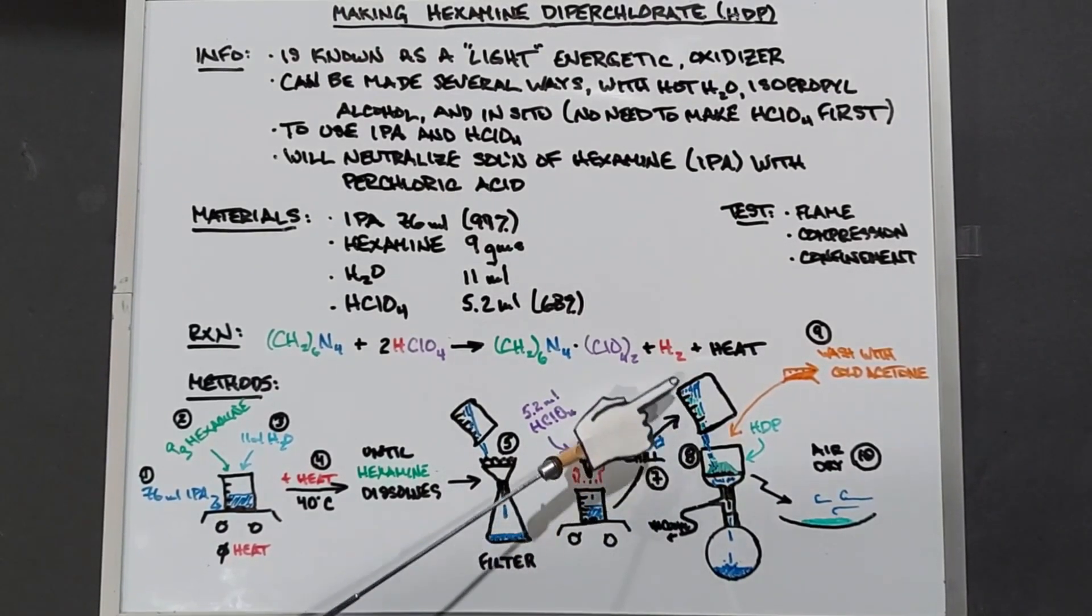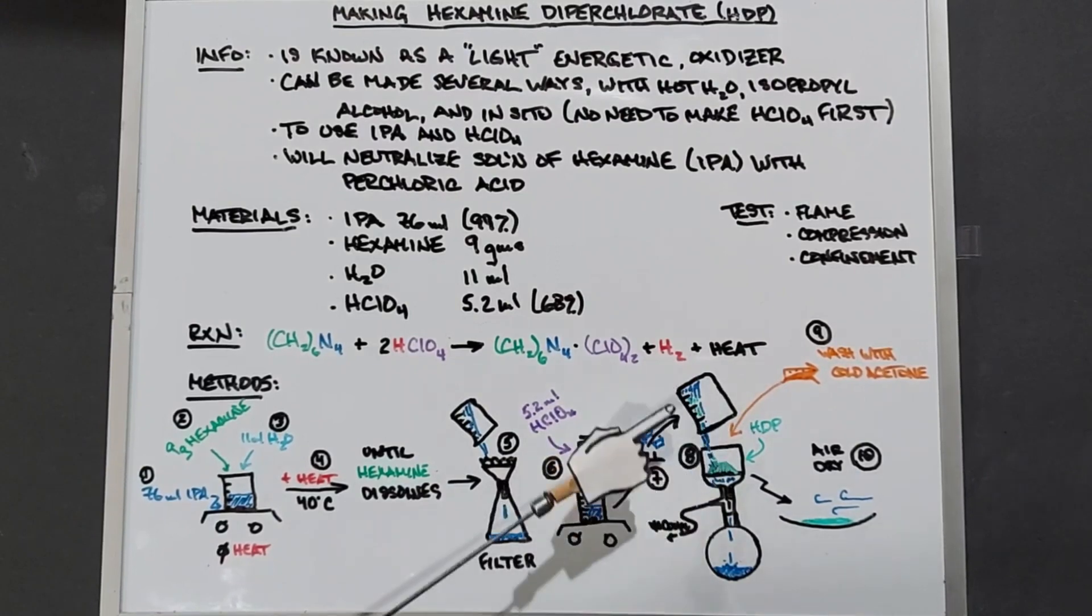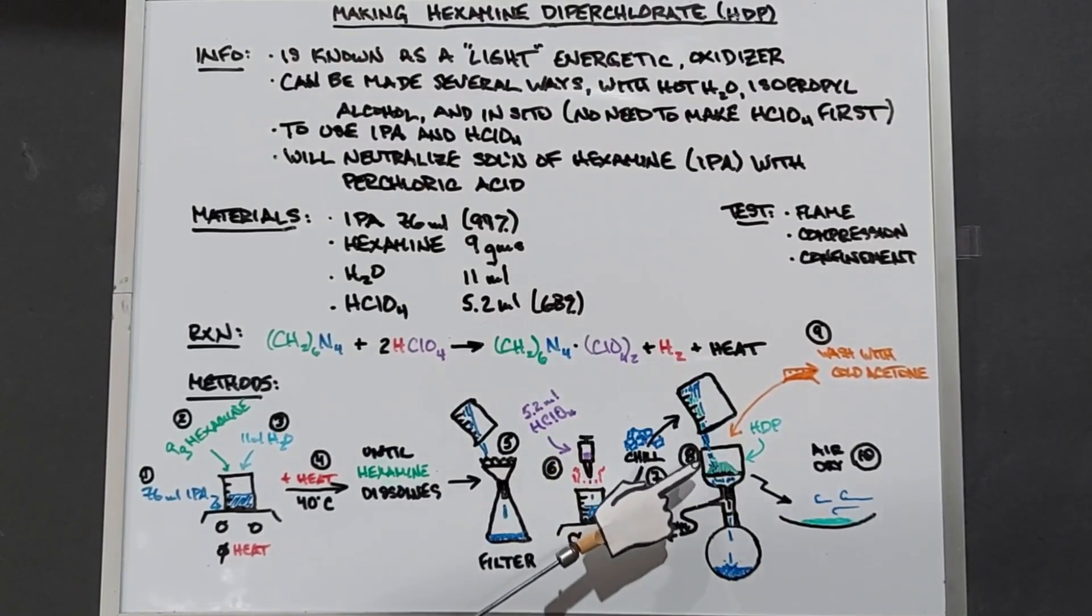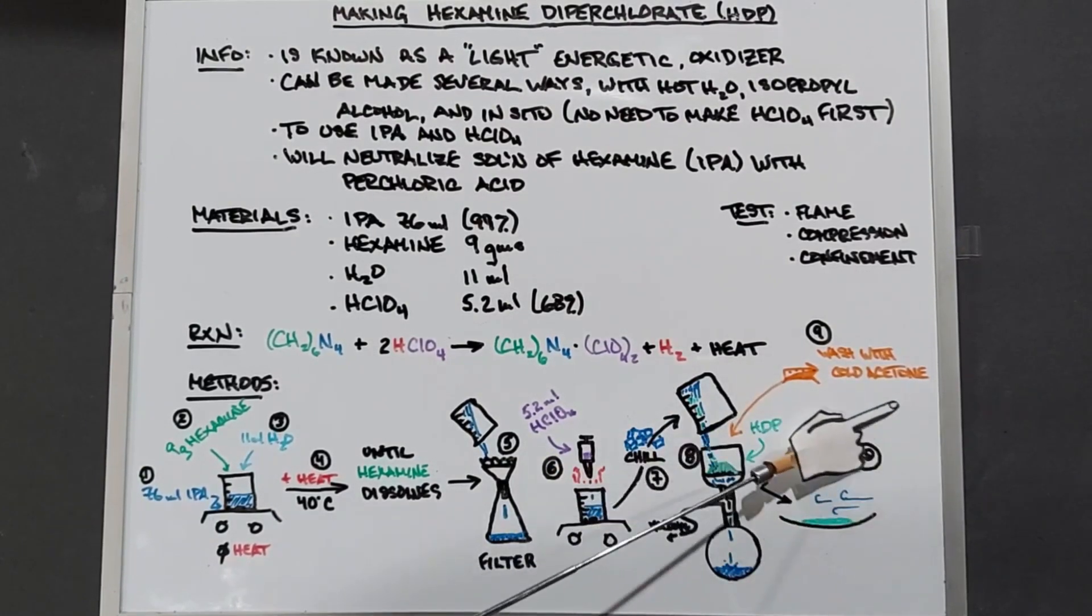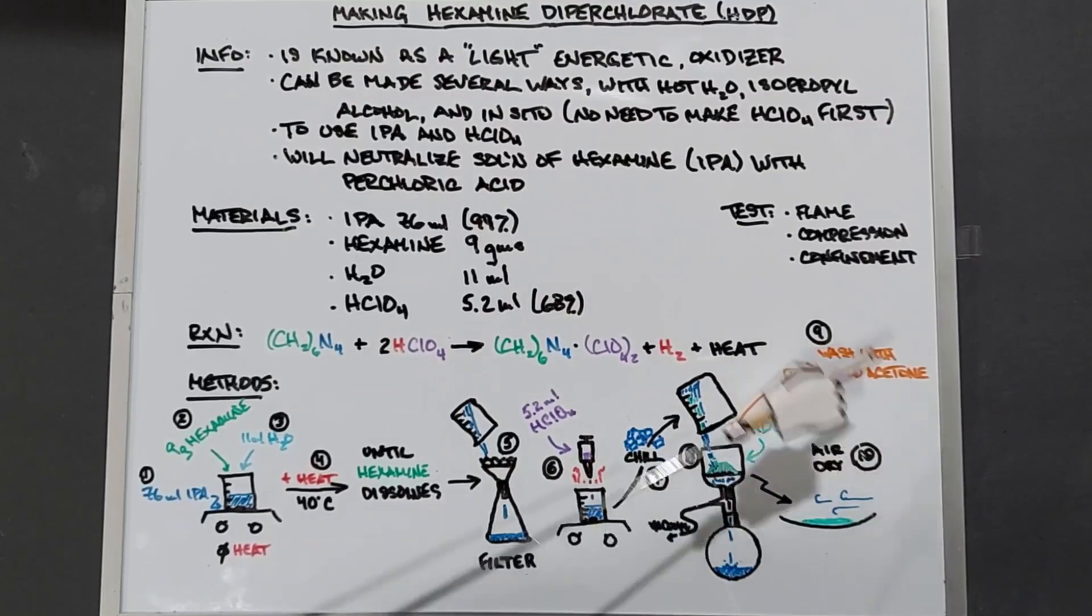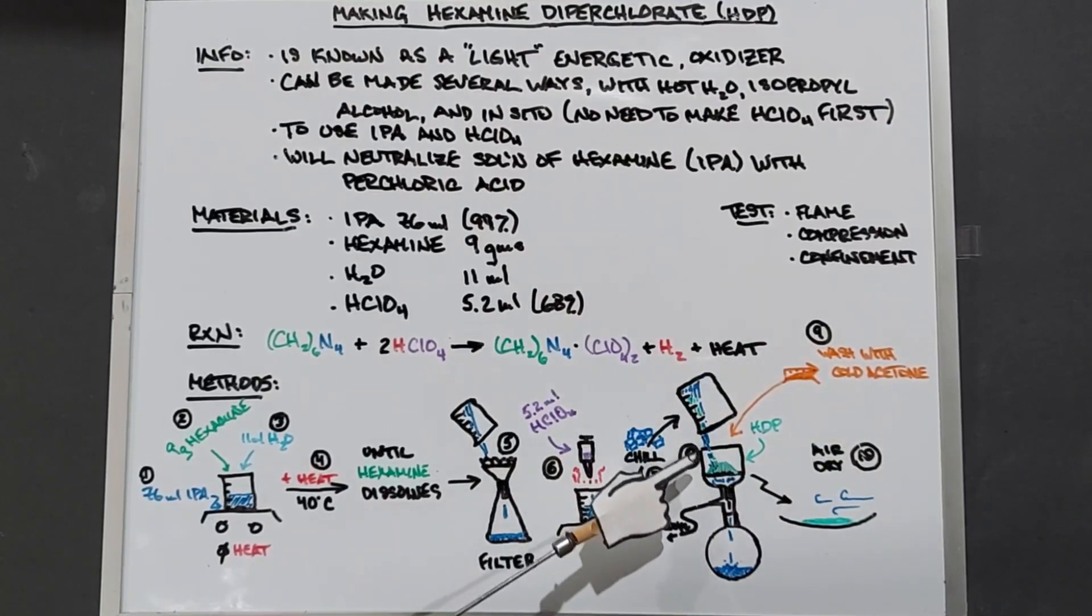At that point we should have all of our HDP already formed. We're going to filter it with vacuum filtration, and once that's done I'm going to use acetone because it does not dissolve in acetone, especially cold acetone, to wash the HDP. Then dump it out and because it's an energetic we're just going to wait until it air dries.